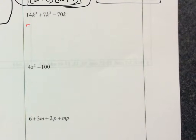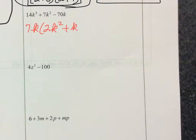So we can factor out 7k. Taking 7k out of 14k cubed leaves 2k squared. Taking 7k out of 7k squared leaves k. Taking 7k out of negative 70k leaves negative 10. Now we need to try to factor 2k squared plus k minus 10. It doesn't have a 1 on the squared term, so the shortcut isn't available — we'll do it the long way.